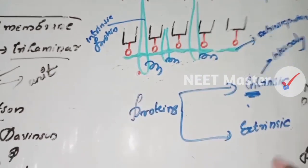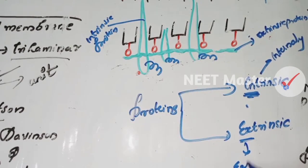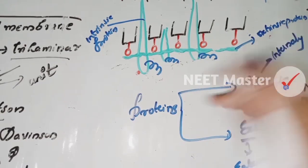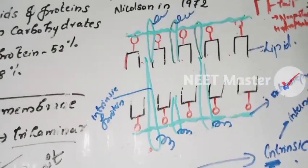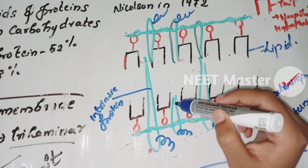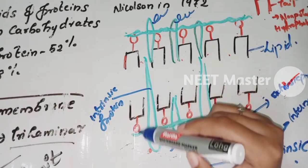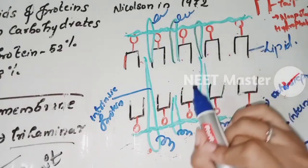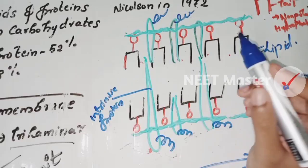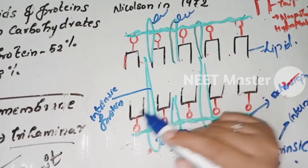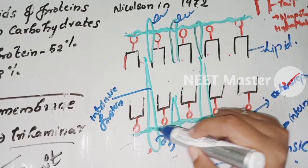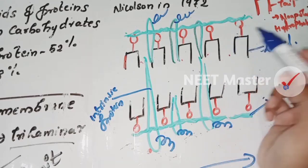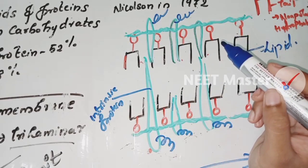Intrinsic proteins are internal proteins. They can be partially or fully embedded in the lipid bilayer. If fully embedded, they are harder to extract. Extrinsic proteins are on the outer surface and are easier to extract.